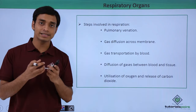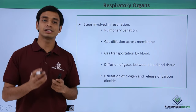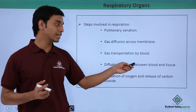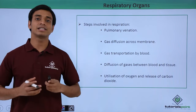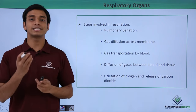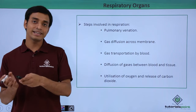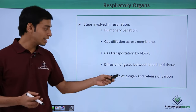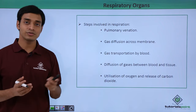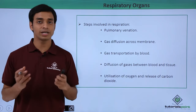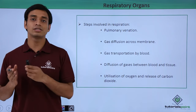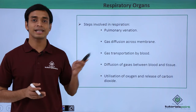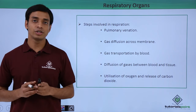The blood, now rich in oxygen, transports it to all cells and tissues of the body. Then diffusion of gases between blood and tissues occurs — the oxygenated blood delivers oxygen into the tissues for metabolic activities, while carbon dioxide from the cells diffuses into the blood. Finally, oxygen is utilized for metabolic activities and the carbon dioxide produced is transported back by the blood to the lungs, where it is expelled out.